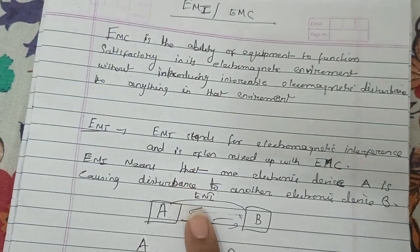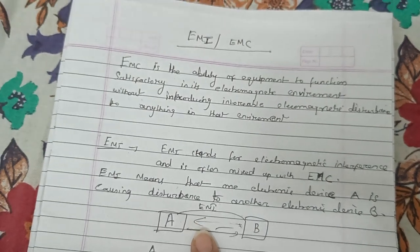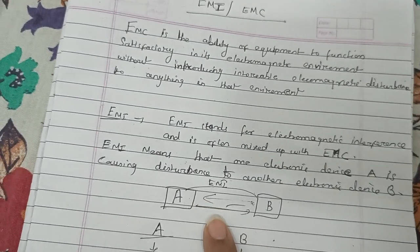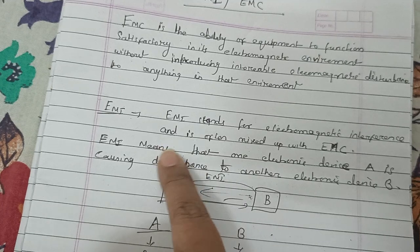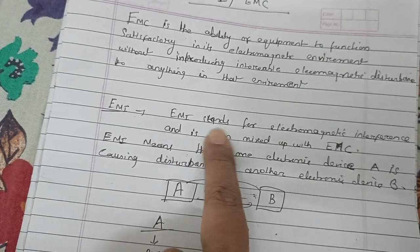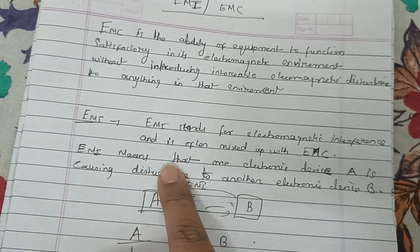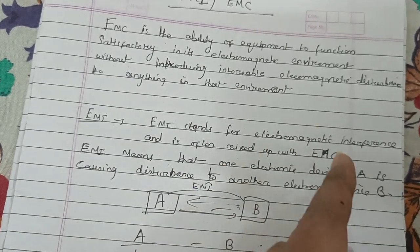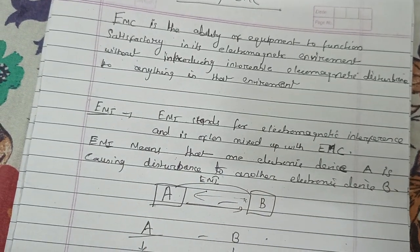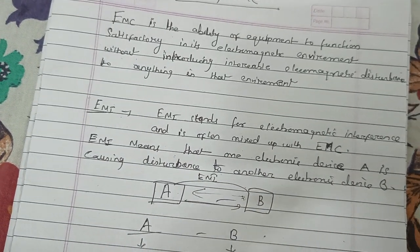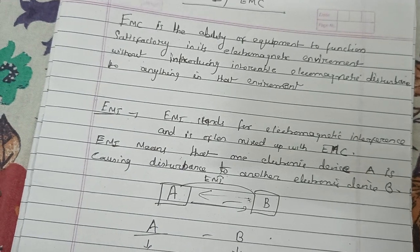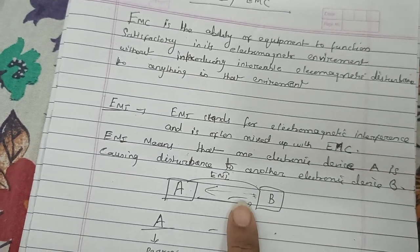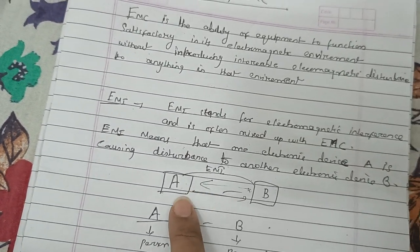These definitions are taken from Google, you can find them there as well. EMI stands for electromagnetic interference and it is often mixed up with EMC — every time you see the question about EMI, EMC will come up as well.